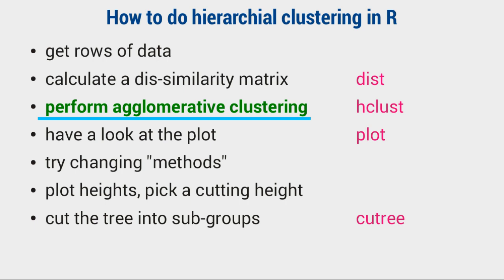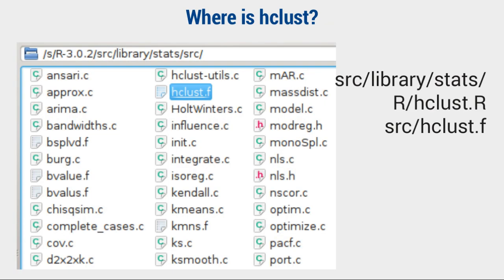In the original version, the hclust function takes as arguments the dissimilarity matrix from the dist function. You can choose from seven different types of estimators as we merge members. The source we are looking for is in library stats. R houses the R interface, while SRC houses external source, which are in C or FORTRAN.